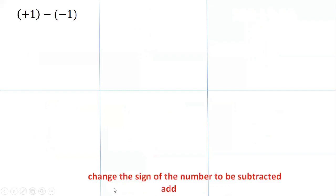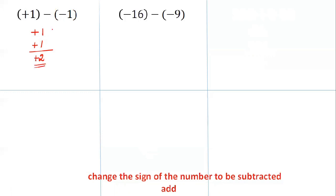Now let us solve some problems on subtraction of integers. Subtract minus 1 from plus 1. In between the two integers there is a minus sign, so we subtract. Write plus 1, then change the sign of the number to be subtracted: minus 1 becomes plus 1. Now look at the signs — both are the same, so add: 1 plus 1 is 2. Answer: plus 2.